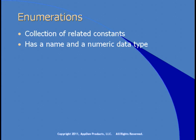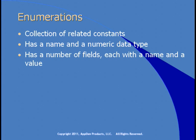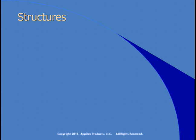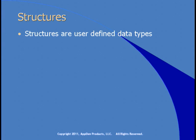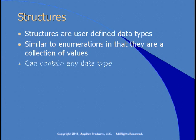Enumerations are a collection of related constants. An enumeration has a name and stores a numeric data type. Inside the enumeration, you have a number of fields, each with a name and a value. For example, you might create an enumeration for the months of the year — there are 12 of them — so you might have an enumeration called Months with fields January, February, etc. Structures are user-defined data types. They're similar to enumerations in that they're a collection of values, but they can contain any data type — strings, date-times, etc. Let's go see a demo of constants, enumerations, and structures.